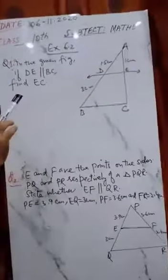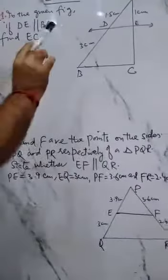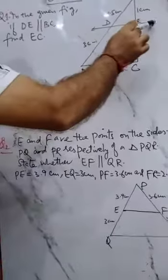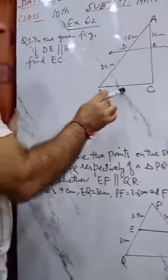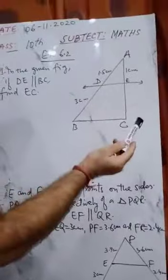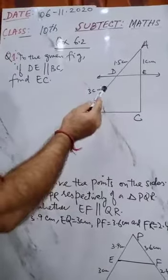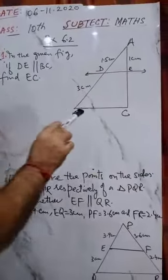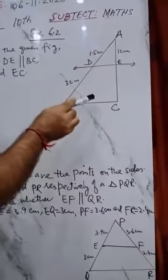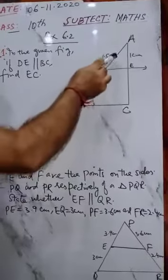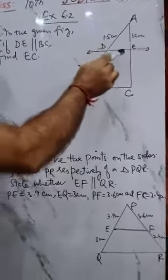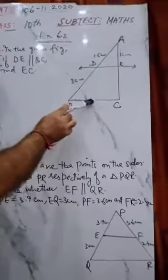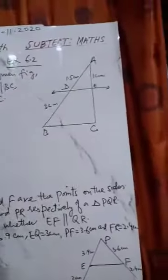This is what BPT says. Again I repeat, if we draw a line from the third side, then the other side will be equal to the third side. If the sides are proportional, then the line will always be parallel. This is the Converse of BPT.